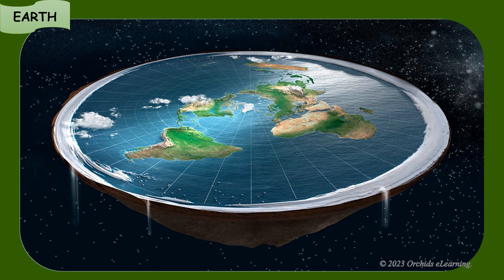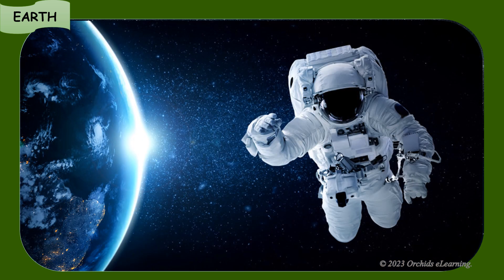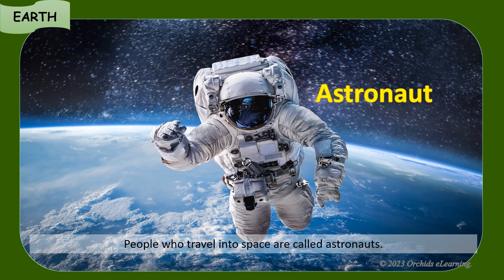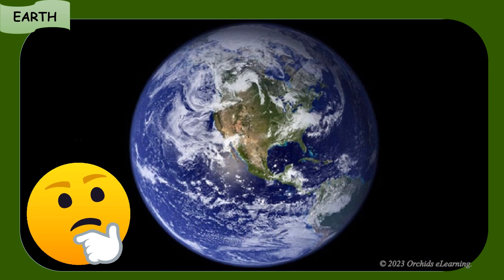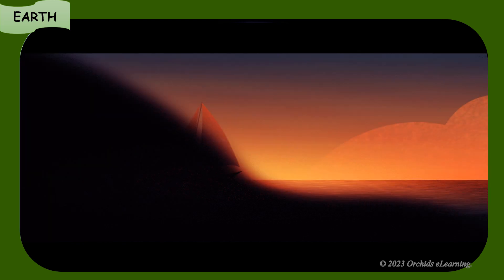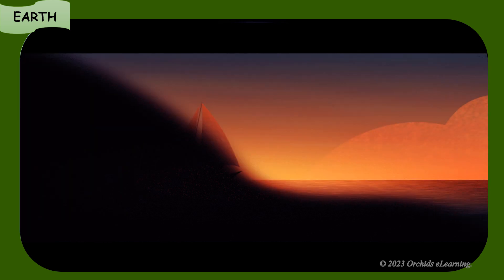Many years ago, people thought that the Earth was flat. The Earth appears flat to us because we see only a tiny part of it. But people who have traveled into space have seen the Earth to be round from there. People who travel into space are called astronauts. If we stand at a seashore and watch a ship sailing away from us, we will observe that the lower part of the ship disappears first and the top part disappears last. This is because the Earth is round.